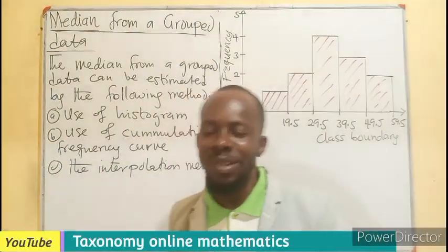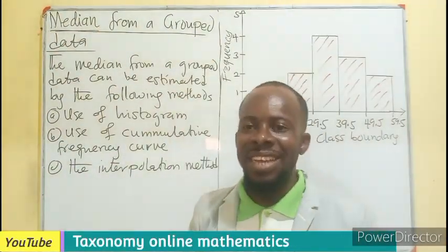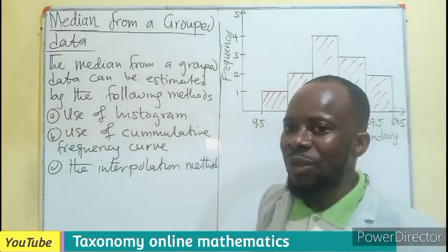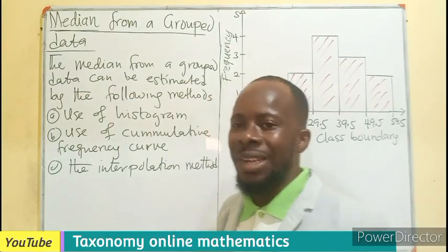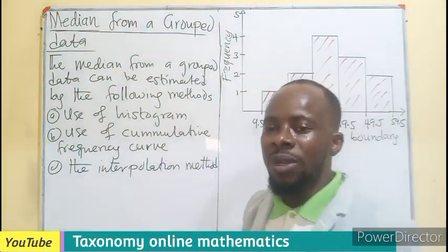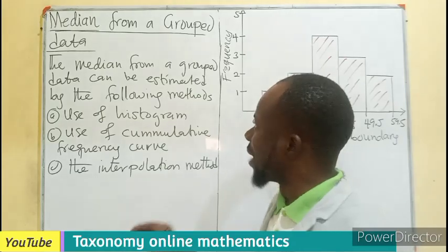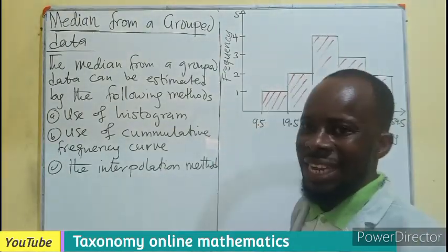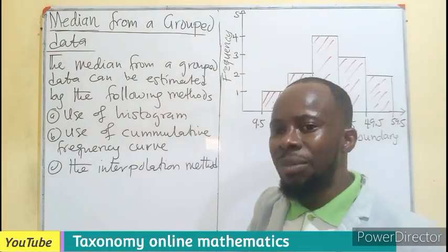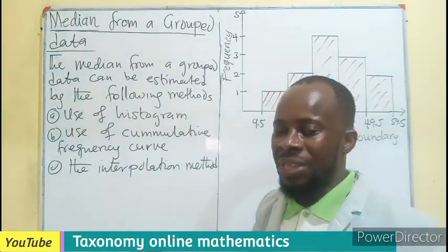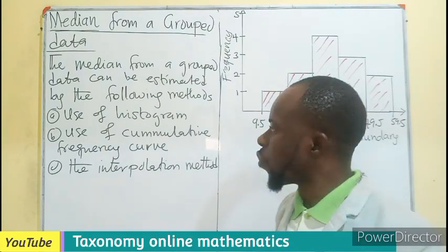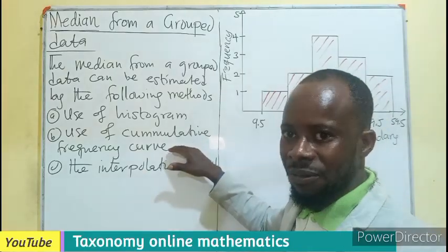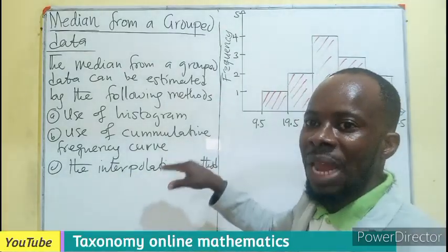Welcome, a continuation of our series on central tendency under statistics. We are taking the second episode of the median, which is the median from grouped data. The median from grouped data can be estimated by the following methods. There are three methods at which we can estimate the median from grouped data, which is having a range of intervals. One, the use of a histogram. Two, the cumulative frequency curve. And then the interpolation method, which is the formula method.